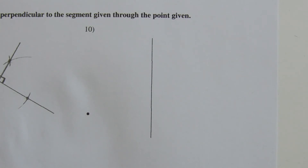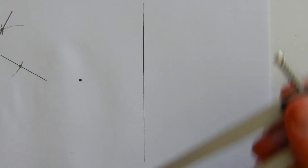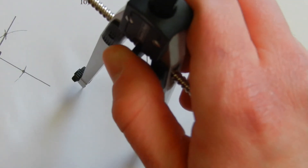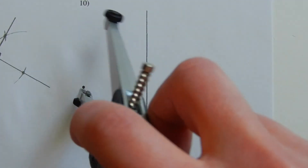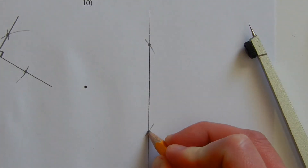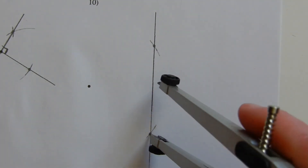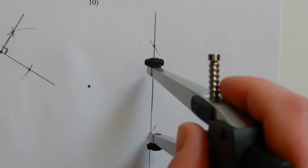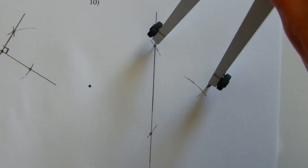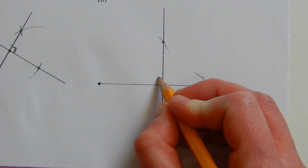Number ten: constructing a line segment perpendicular to the given segment through a given point that is not on the segment. We extend the segment slightly, then place our compass on the given point, extend it to the line, mark a tick mark, swing around, and mark the other intersection of the line. We now have two endpoints for a newly created segment. Going a little further than halfway, we make a mark on the opposite side, swing to the other created endpoint, make another mark — that intersection connects back to the given point as our perpendicular segment.